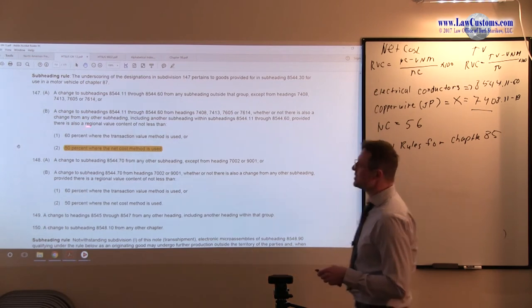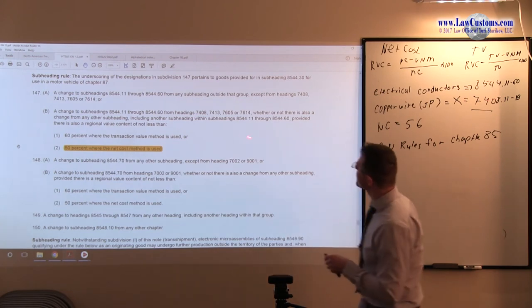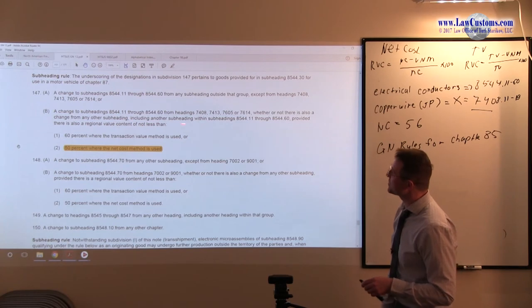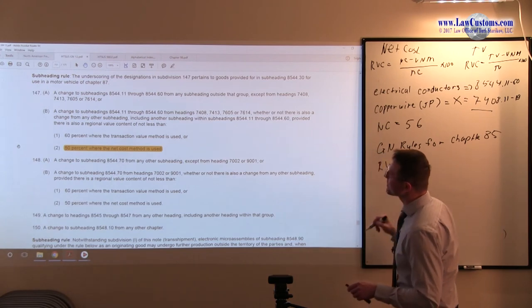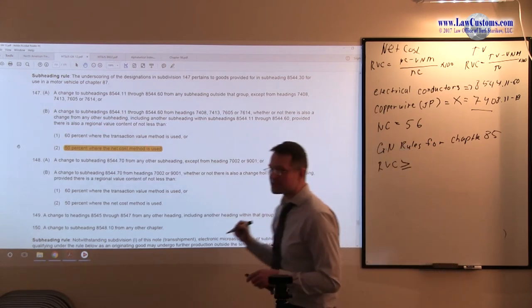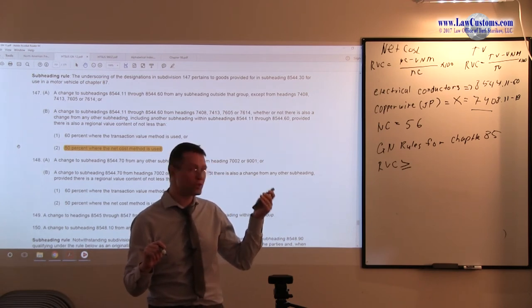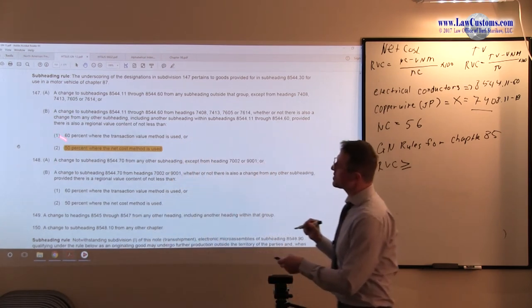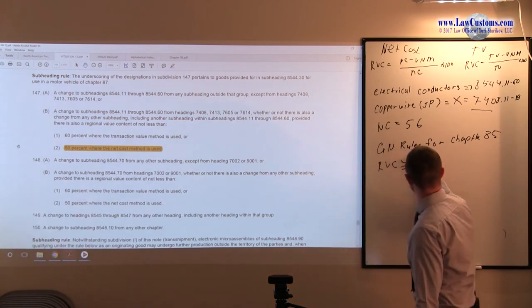We go to paragraph B. A change to subheading 85.44.11 through 85.44.60 from heading 7408, which is our guide, whether or not there is also a change from any other subheading, provided that the RVC is not less than... So here RVC is not less than, meaning that it must be equals or more. Customers examiners have told us that the relationship influences the price, so we cannot use transaction value. We must go to the net cost. Subparagraph 1 is not our choice because it deals with transaction. We are going to the 50% rule which is the net cost method. So RVC must be 50%.